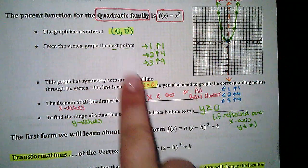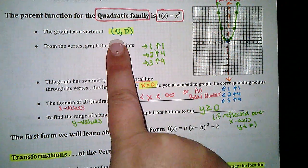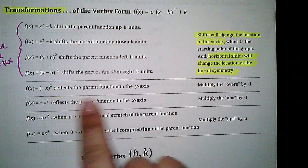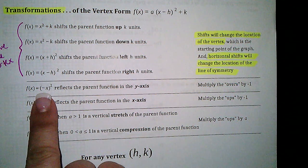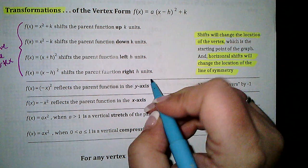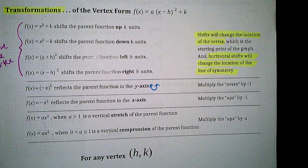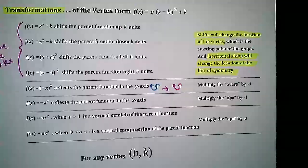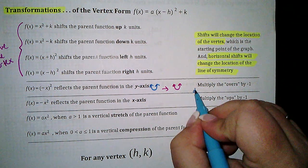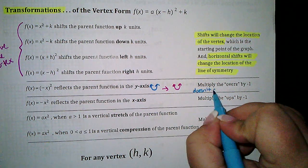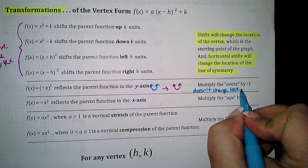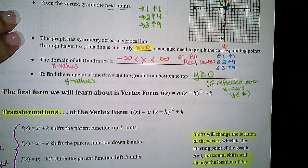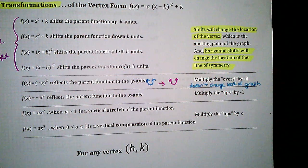When x equals 0, that's the same as the x value in the vertex — so whatever these are, they go together. That's why a horizontal shift will change your line of symmetry. Reflection over the y-axis: this negative will be inside the parentheses, and it would multiply the overs. This one doesn't really change the look of the graph because since we have symmetry with overs going both ways, flipping them wouldn't matter.